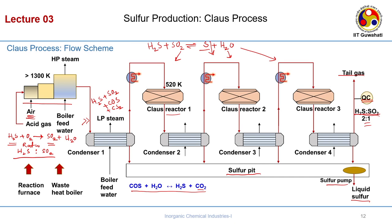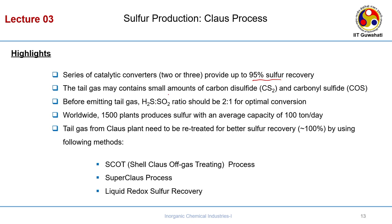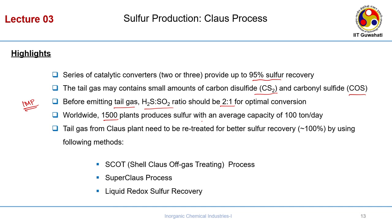The series of catalytic converters provides up to 95 percent sulphur recovery. The tail gas may contain small amounts of CS2 and COS. The H2S-to-SO2 ratio of 2:1 is very important for optimal conversion — if not maintained, you may not achieve 95 percent sulphur recovery, and the amount of tail gas sent to the incinerator will exceed permissible values. Worldwide, around 1500 plants produce sulphur with an average capacity of 100 tons per day.